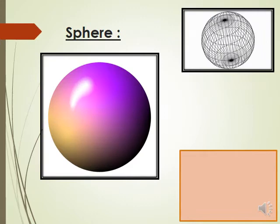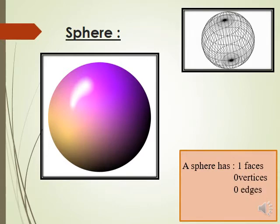The second shape is the sphere. A sphere has one face, zero vertices, and zero edges.